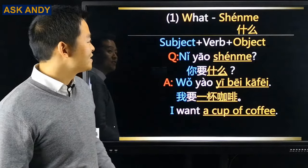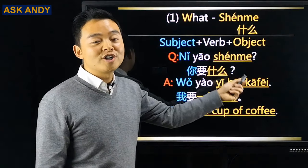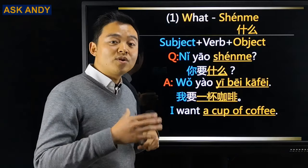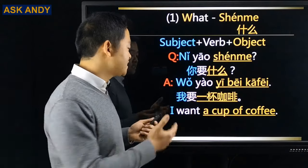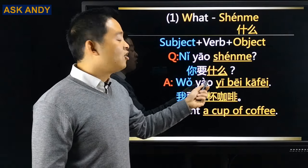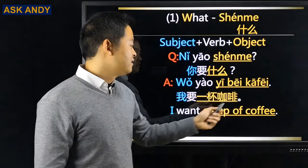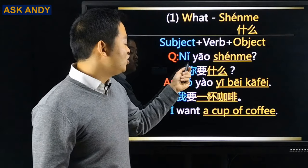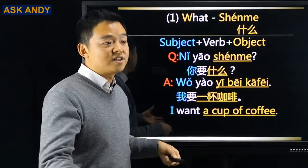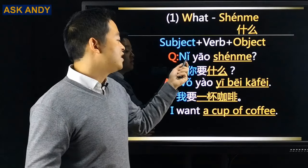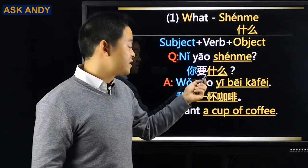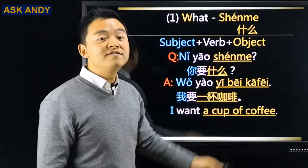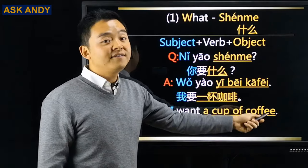Let's see examples. 你要什么? — Quote and replace: keep the same word order, change 你 to 我, and replace 什么 with new information. A possible answer: 我要一杯咖啡 (I want a cup of coffee).